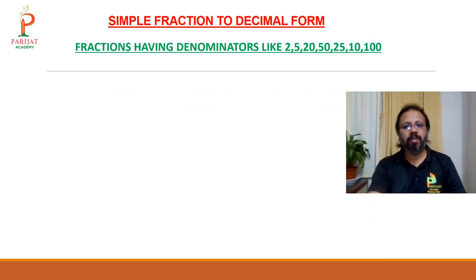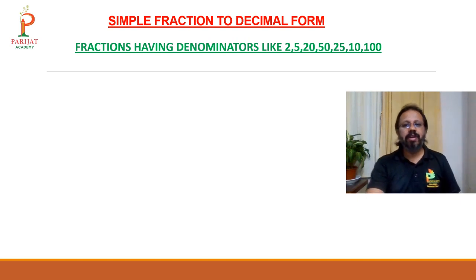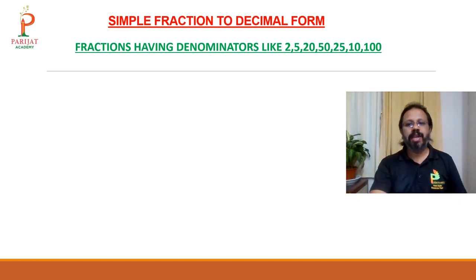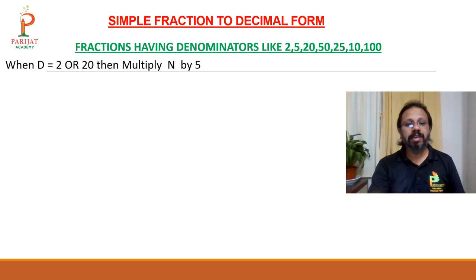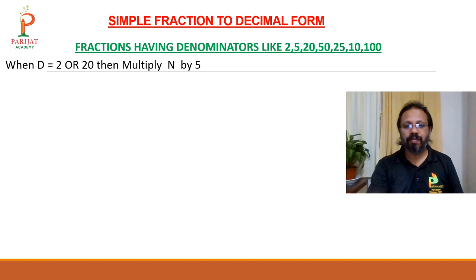Fractions having denominators like 2, 5, 20, 50, 25, 10, and 100. First type: when D (denominator) is equal to 2 or 20, then multiply N (numerator) by 5.